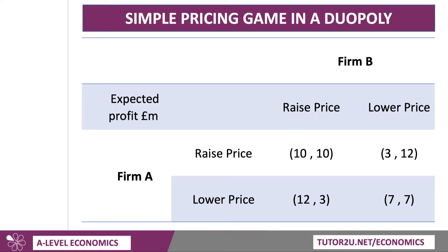Two examples of a payoff matrix that you can use in your exams. Let's consider a duopoly — two firms, firm A and firm B — and they have a decision to make whether to raise the price in the market, charge a high price, or to lower the price, for example a price war. The payoff matrix: firm A is always on the left-hand side, firm B is always on the right-hand side, and the payoff is measured in terms of expected profit.